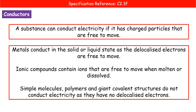The last ones — simple molecules, polymers, and giant covalent structures — none of them conduct electricity because they do not have delocalized electrons, nor do they have any ions that are free to move. So the only ones that can conduct are metals and ionic compounds if they're in the right state.